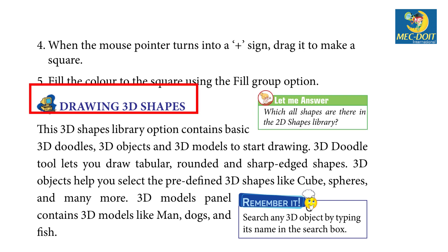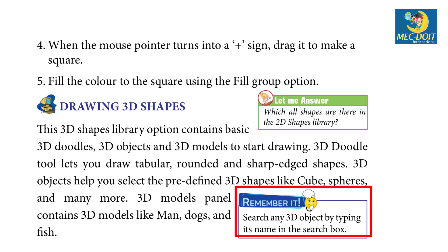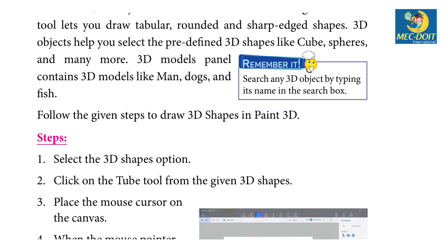Drawing 3D Shapes: The 3D shapes library option contains basic 3D doodles, 3D objects, and 3D models. The 3D doodle tool lets you draw tubular, rounded, and sharp-edge shapes. 3D objects help you select predefined 3D shapes like cubes, spheres, and many more. The 3D shapes panel contains 3D models like men, dogs, and fish. Remember: Search any 3D object by typing its name in the search box.